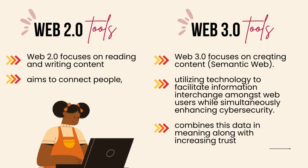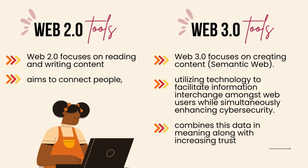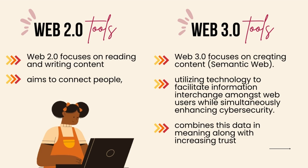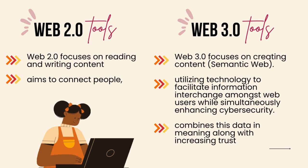The fundamental distinction is that Web 2.0 focuses on reading and writing content, whereas Web 3.0 focuses on creating content — for example, the semantic web. The latter is much better, utilizing technology to facilitate information interchange among web users while simultaneously enhancing cybersecurity. While Web 2.0 aims to connect people, Web 3.0 combines data in meaning along with increasing trust. This happens because of decentralization.